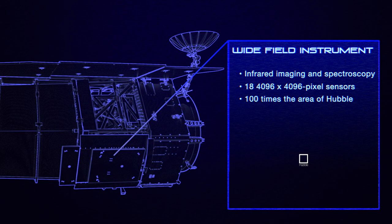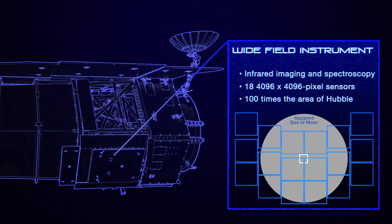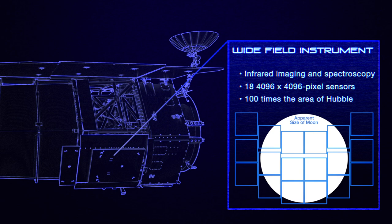Instead of Hubble's single first-generation image sensor, the WFI incorporates 18 third-generation chips that allow it to take pictures capturing 100 times greater sky area than Hubble's. Each 300-megapixel image will enable scientists to study a large portion of the sky.